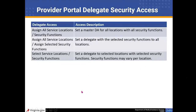The provider portal delegate security access has three options. First, you can assign all service locations and all security functions — setting a master delegate administrator for all locations with all security functions. Second, you can assign all service locations but assign selected security functions, setting a delegate with your chosen security functions across all provider locations. The third option is to select specific service locations and select specific security functions, setting a delegate to selected locations and then choosing the security functions that may vary per location.